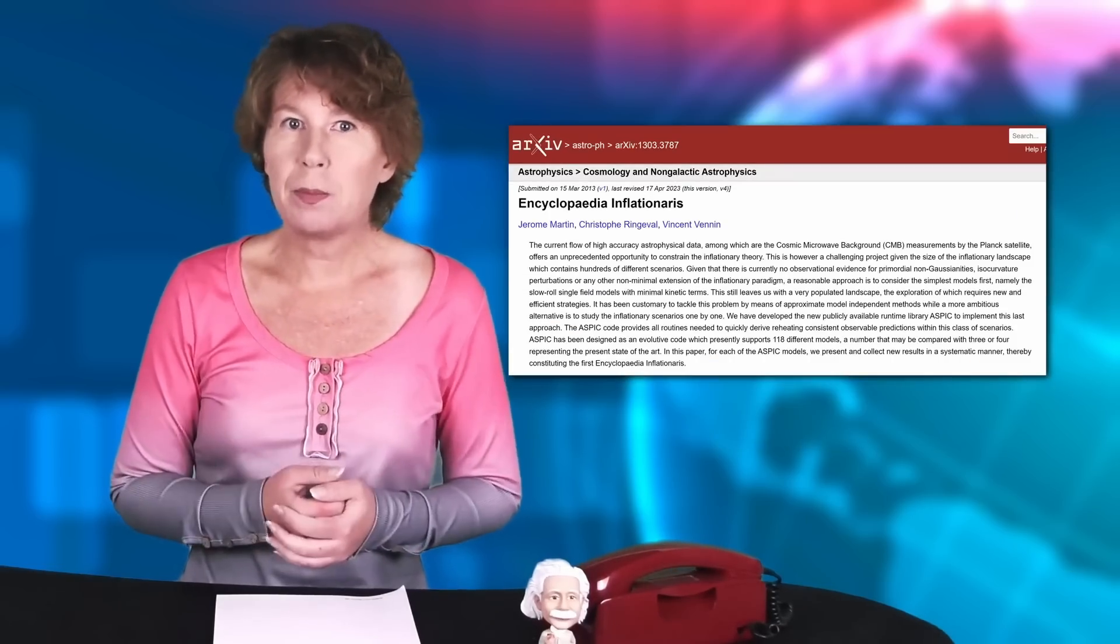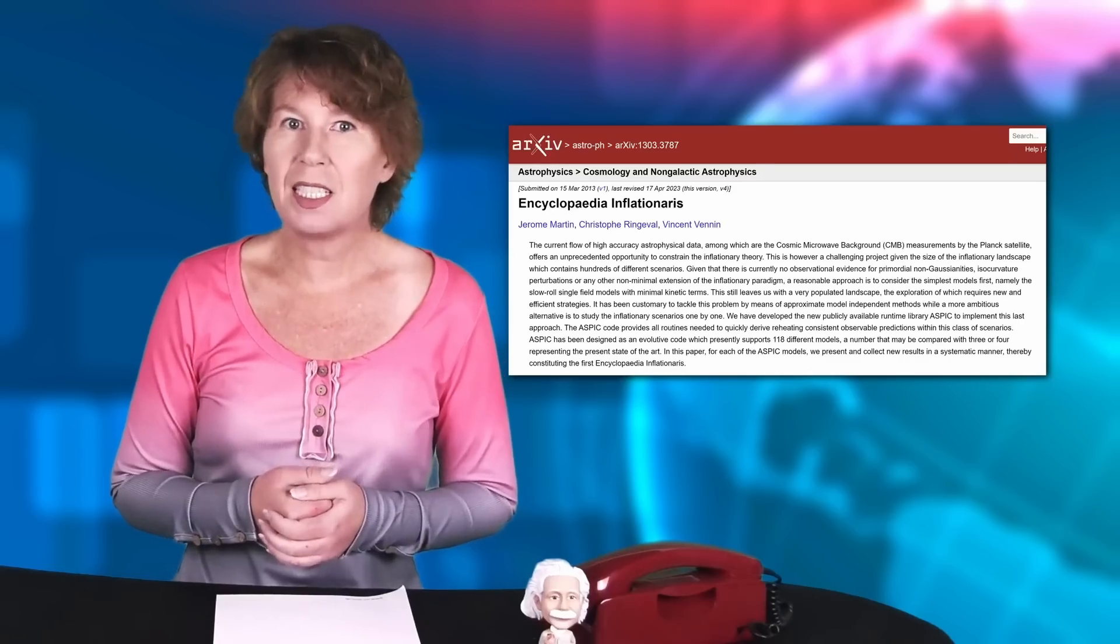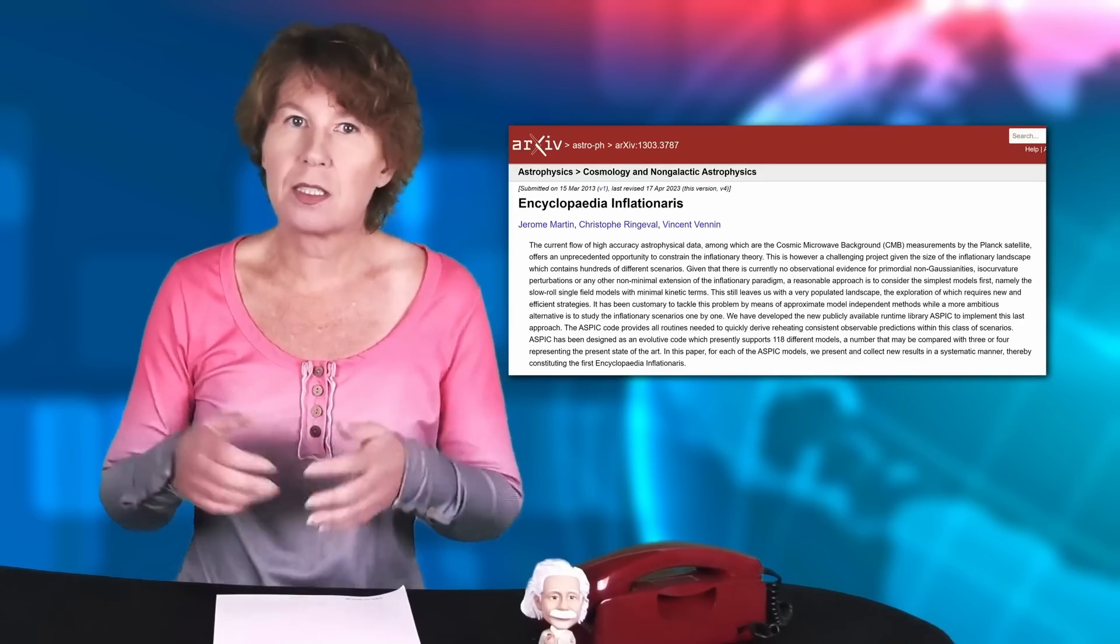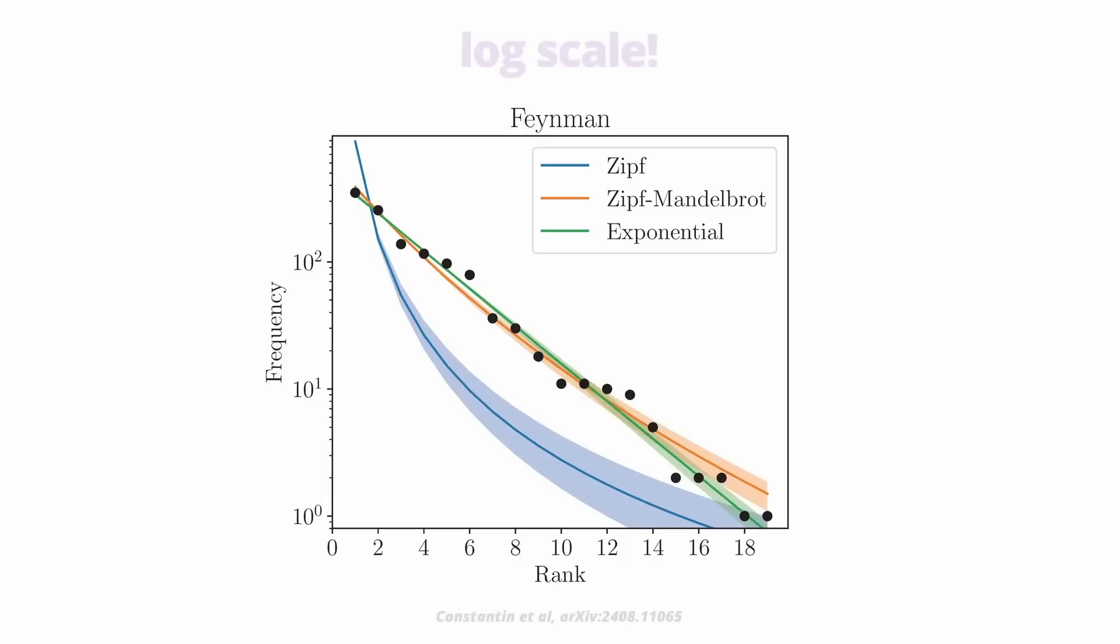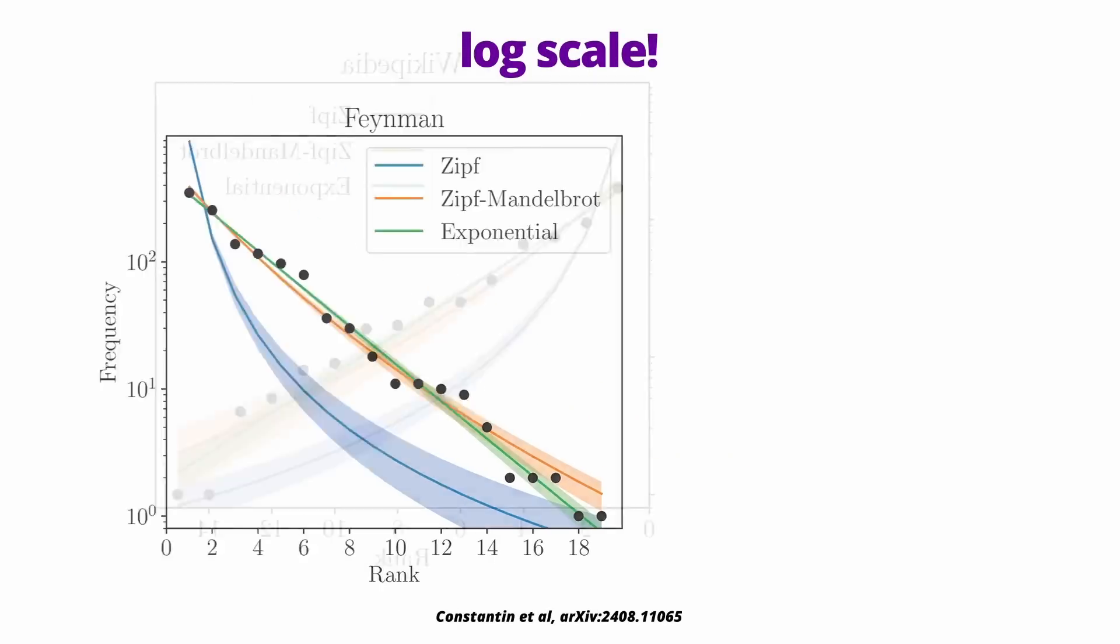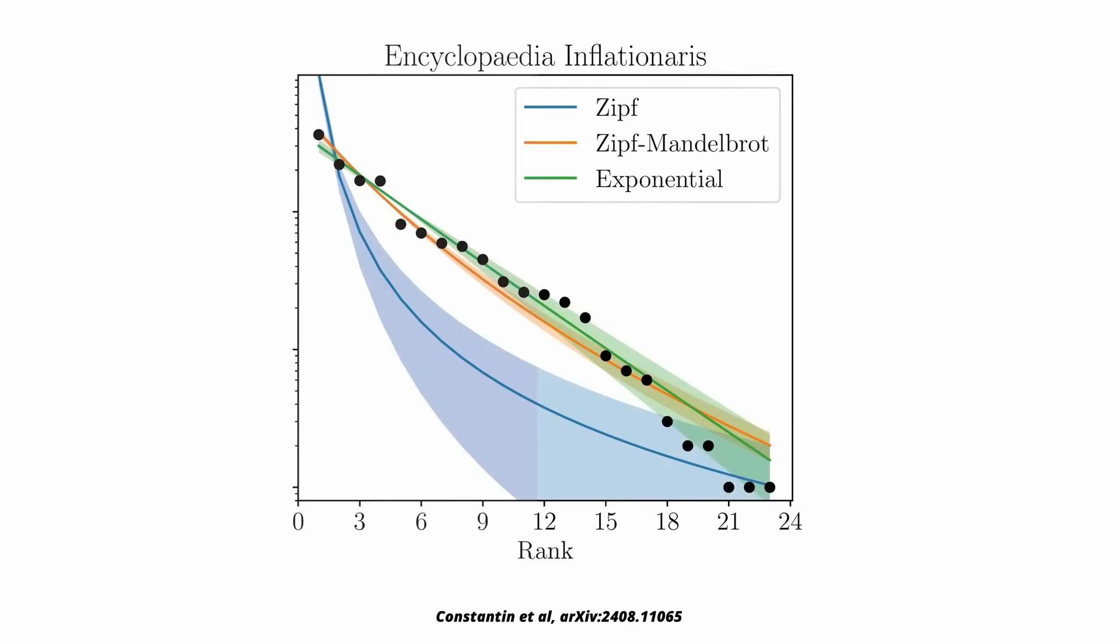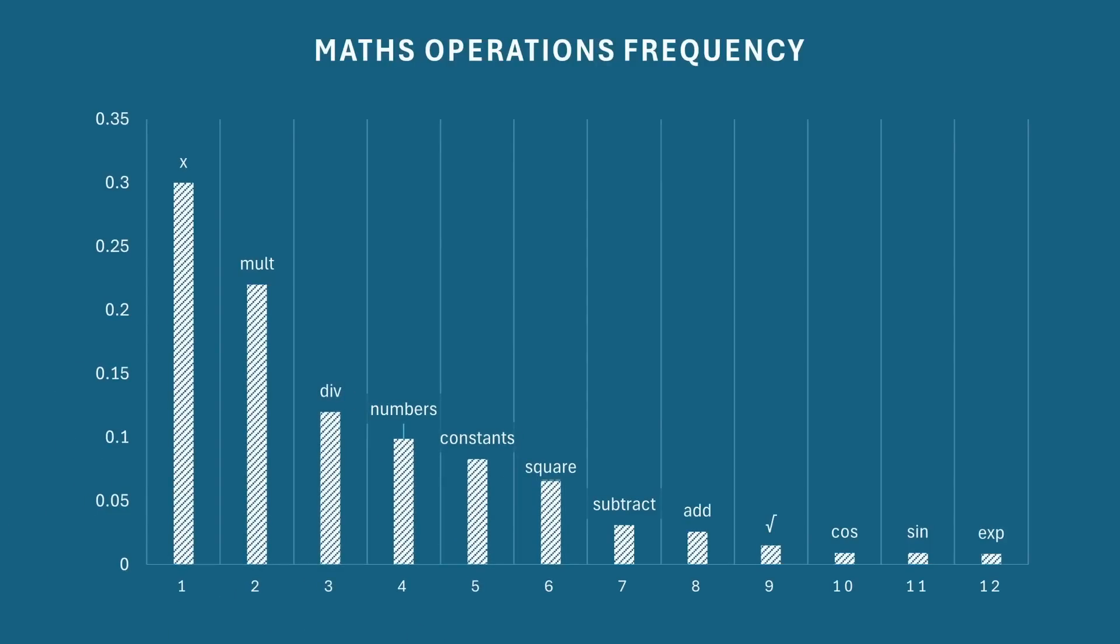They then counted the frequencies by which these appear in three different samples. The Feynman lectures of physics, a Wikipedia list with equations and a paper called the Encyclopedia inflationaris that lists a lot of models for inflation, so a lot of equations. What they find is that the frequency of mathematical expressions does follow a law, but it's not the same as the languages. It's not a power law decay, it's an exponential decay, and it's surprisingly regular despite the actually quite small samples. This is very intriguing.